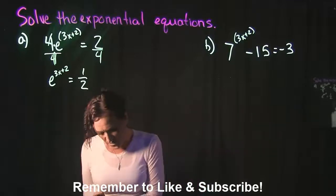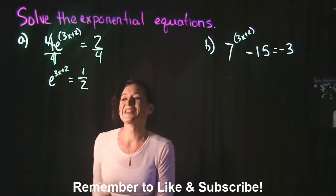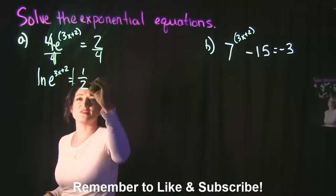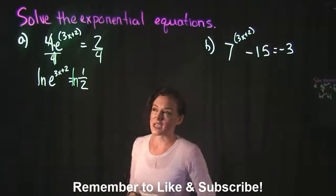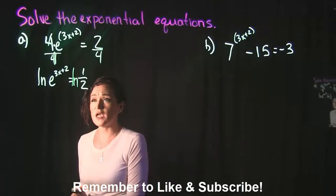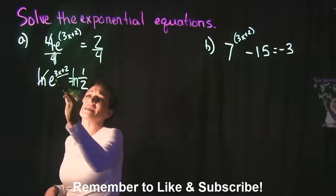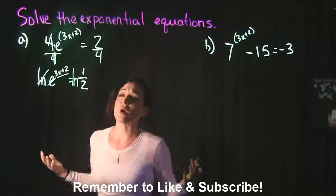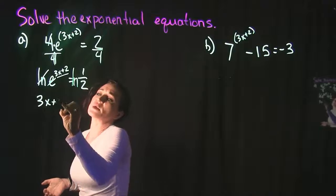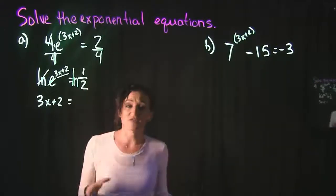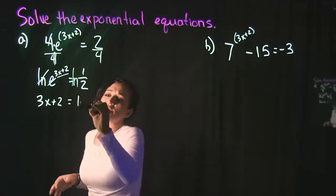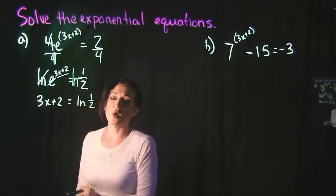Now what we're going to do next is take the ln of both sides. On the left hand side, when you're taking the ln of e, ln and e actually cancel out. They are opposites of each other. It's going to leave me with 3x + 2 on the left hand side. And this equals ln(1/2).